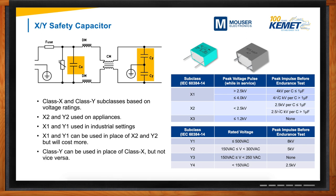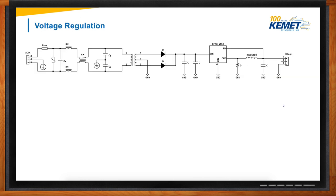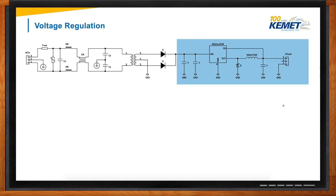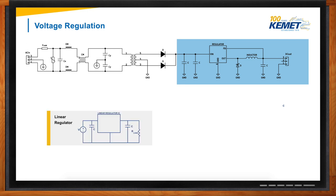After the filtering stage, the signal goes through the transformer and rectification stage where AC is converted into unregulated DC. The unregulated DC must go through the regulation stage to make it suitable for your application. There are two different types of regulators: a linear regulator and a switching regulator.